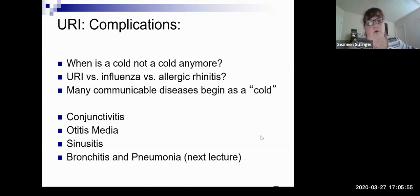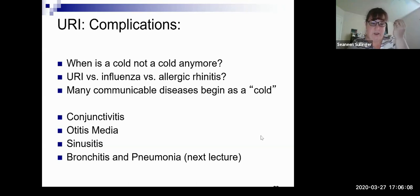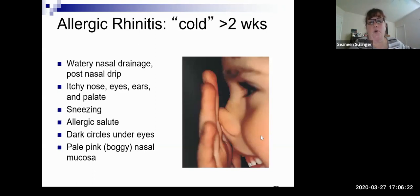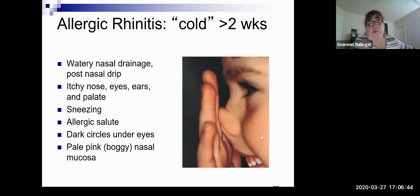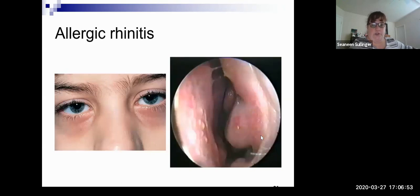Complications — is it a cold, upper respiratory, flu, or allergies? A lot of communicable diseases begin as a cold. Is there conjunctivitis? Is the conjunctiva red? Is there an earache, otitis, or sinusitis? We'll talk about bronchitis and pneumonia in the lower airway. With allergies you see the allergic salute — kids pushing their nose up to wipe drainage — nasal drainage, itchy nose, sneezing, dark circles under the eyes, and pale pink mucosa.